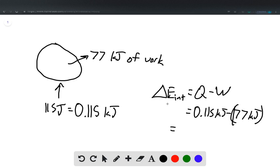And so that gives a change in delta E internal of negative 76.885 kilojoules. And to account for sig figs, 76.9 kilojoules is a more reasonable number sig fig-wise. So that is the final answer for this problem.